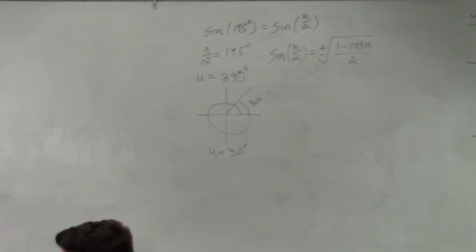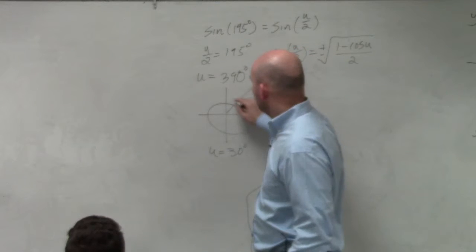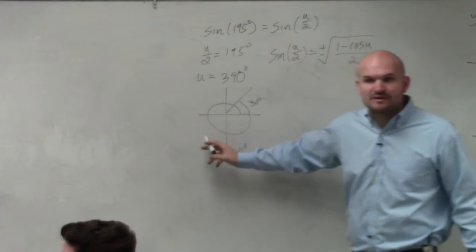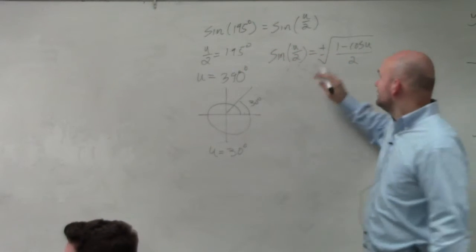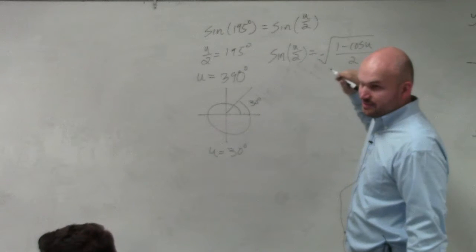Now if you look at what quadrant 195 degrees is in, 195 degrees is in which quadrant? 195 degrees, not u. Third quadrant. Is sine positive or negative in the third quadrant? Negative. So your formula is going to be negative.